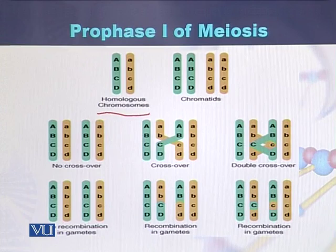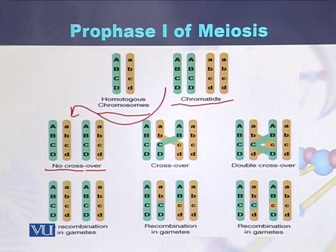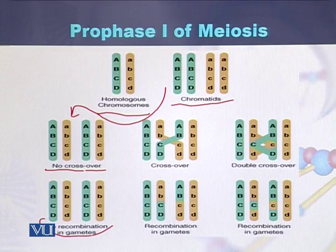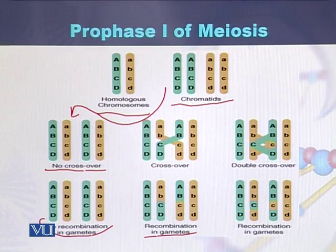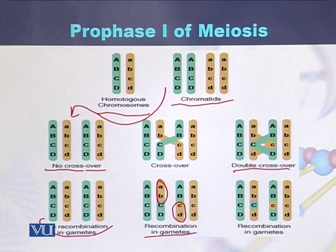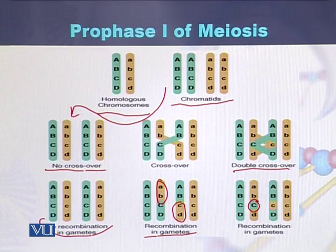This is a pair of homologous chromosomes showing their chromatids. If there is no crossover, the chromatids will be exactly like the parents — there is no recombination in the gametes. If there is a single crossover between homologous chromosomes, recombination occurs and the chromatids exchange fragments. With a double crossover, some genes or alleles arrive on one chromatid while others move to the other, demonstrating the process of chiasmata formation and crossing over between homologous chromosomes.